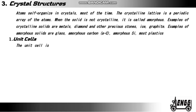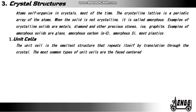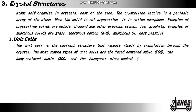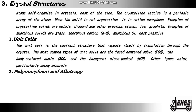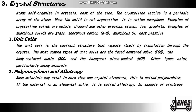Unit cells. The unit cell is the smallest structure that repeats itself by translation through the crystal. The most common types of unit cells are the face centered cubic (FCC), the body centered cubic (BCC) and the hexagonal close packed (HCP). Other types exist particularly among minerals. Polymorphism and allotropy. Some materials may exist in more than one crystalline structure — this is called polymorphism. If the material is an elemental solid, it is called allotropy. An example of allotropy is carbon, which can exist as diamond, graphite and amorphous carbon.